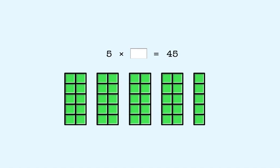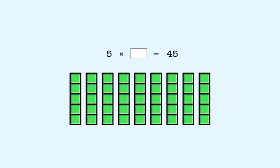Each 10 is 2 fives. So we have 9 fives in all. So 5 times 9 is 45. So we put 9 as the answer here.